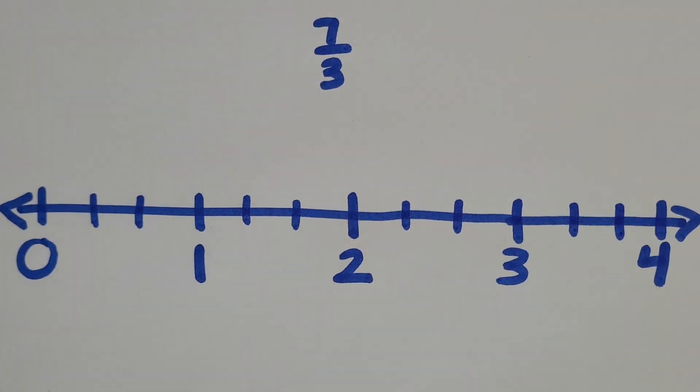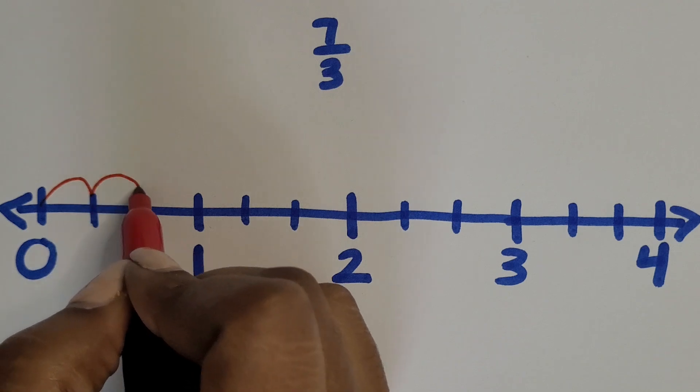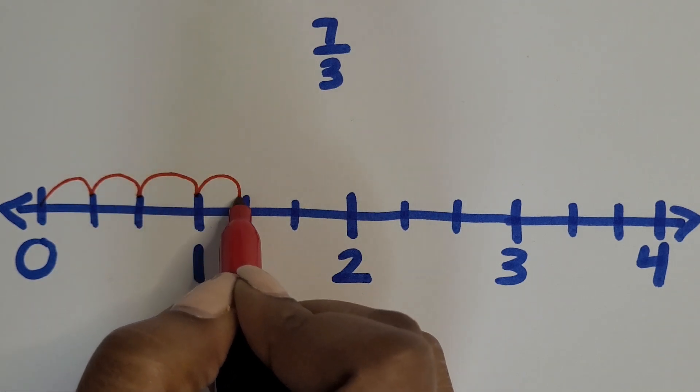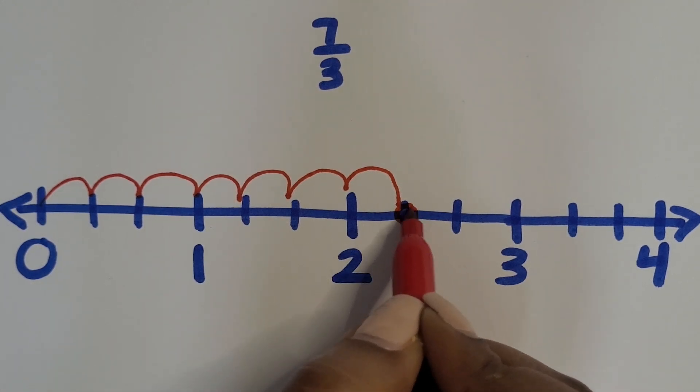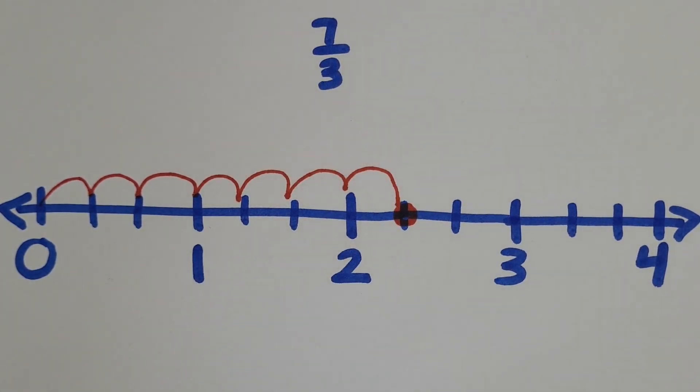So you can have your students count with you: zero, one third, two thirds, three thirds which is the same as one hole, four thirds, five thirds, two which is six thirds, and then seven thirds. And then go back and label them.